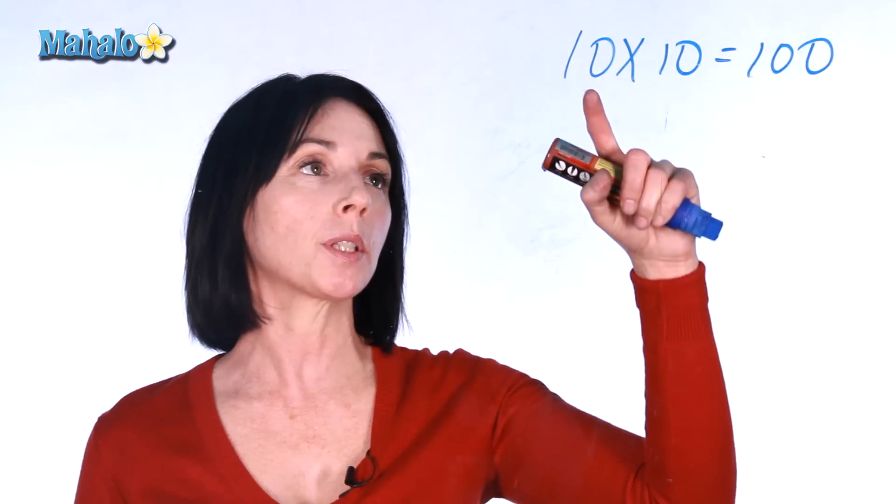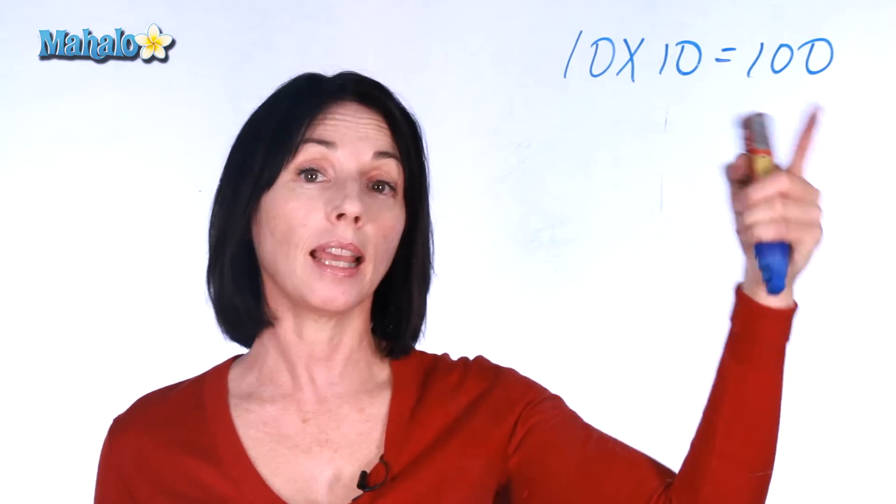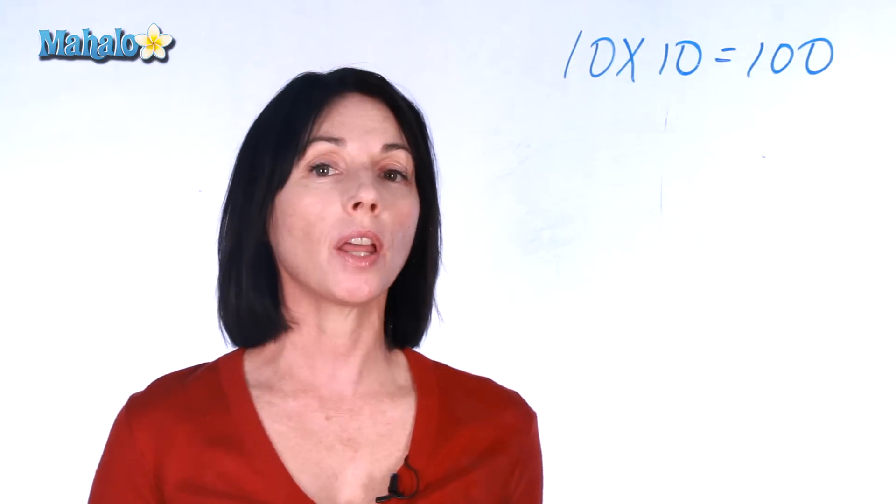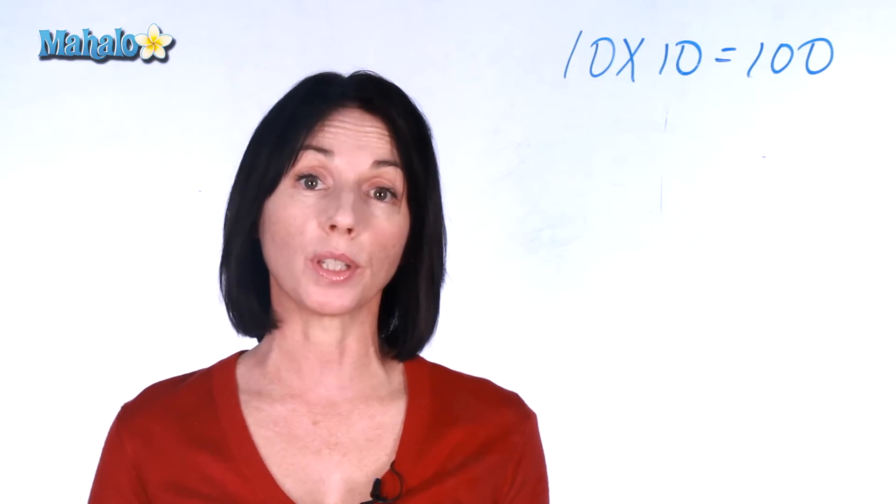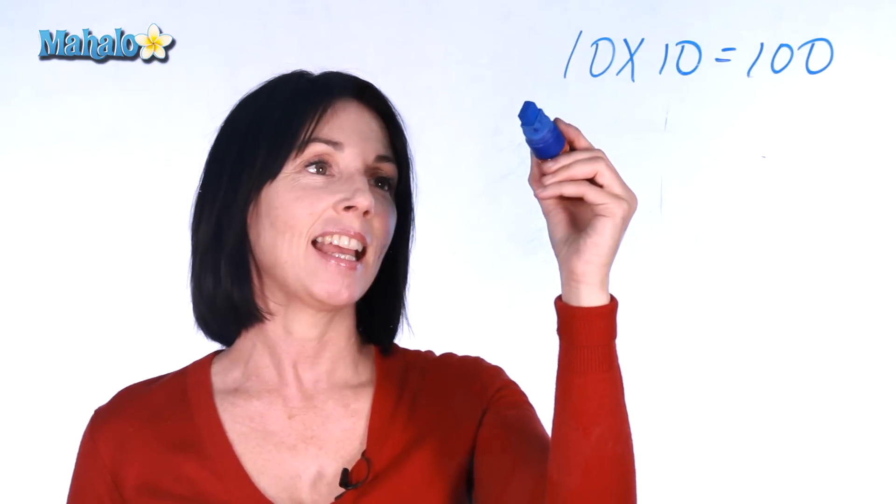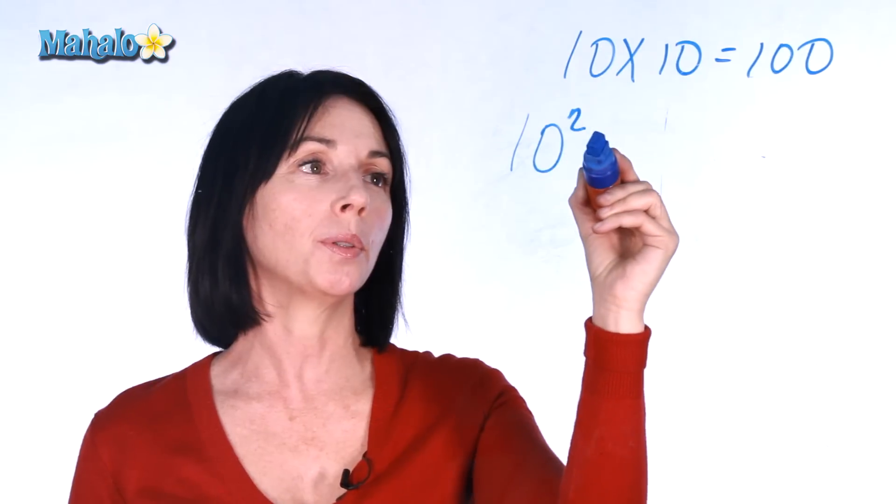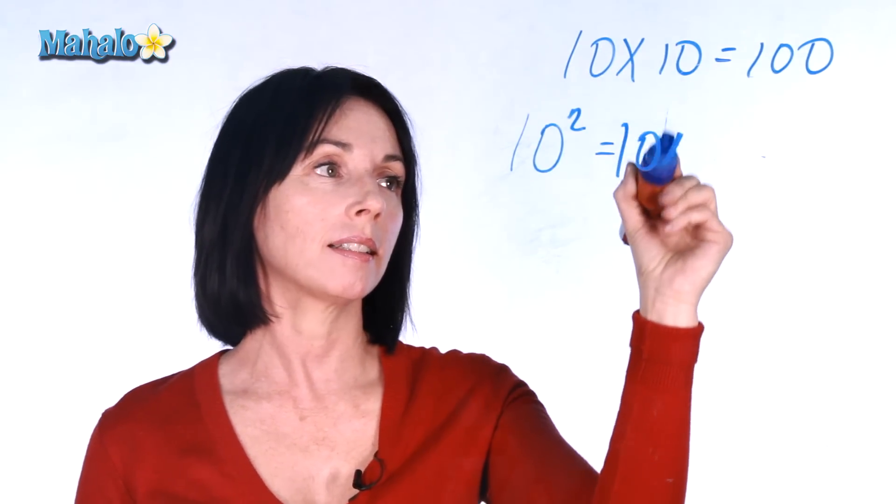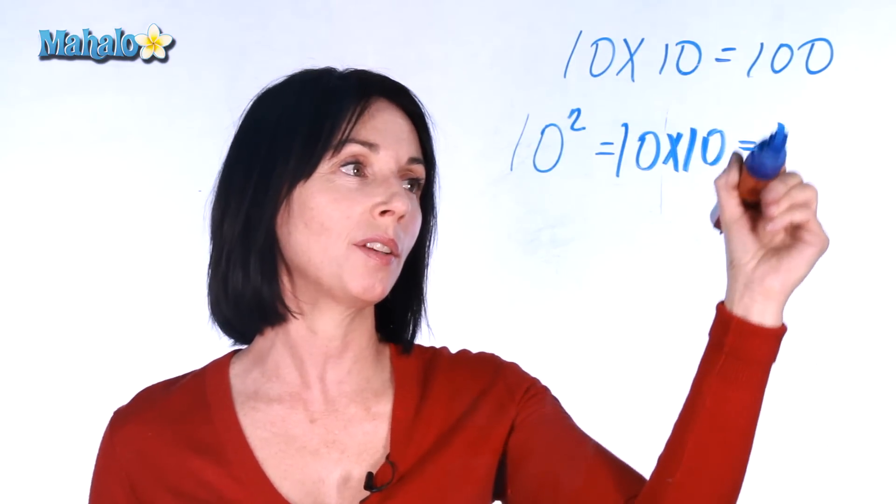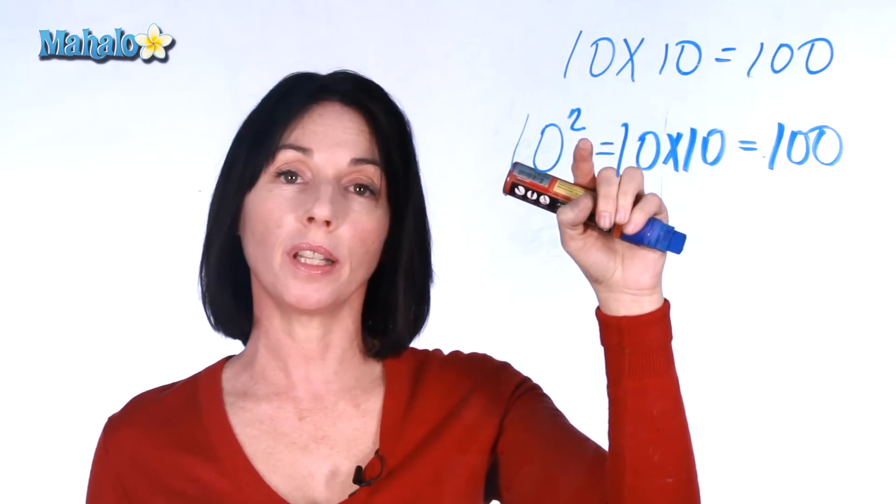So let's say we multiply 10 times 10. That gives us 100, but there's another way to write 10 times 10 using an exponent, and it's like this. 10 to the power of 2 is equal to 10 times 10, and that equals 100. So this number here is the exponent.